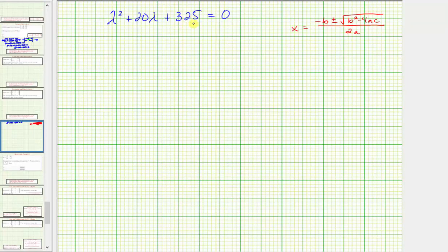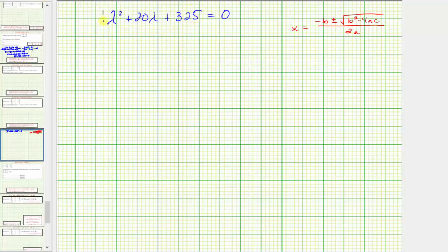Because there are no factors of 325 that add to 20, this is not factorable, so we'll have to use the quadratic formula to find these solutions. Where a equals one, b equals 20, and c equals 325.